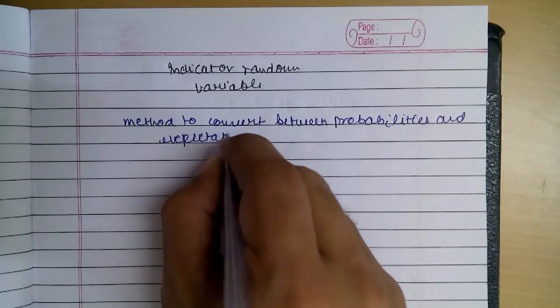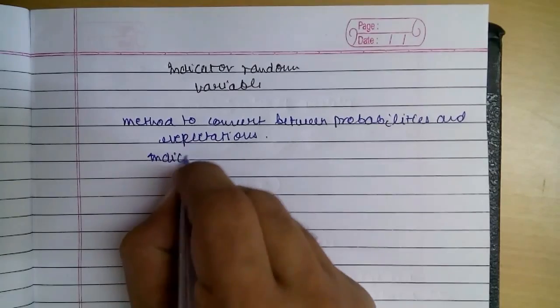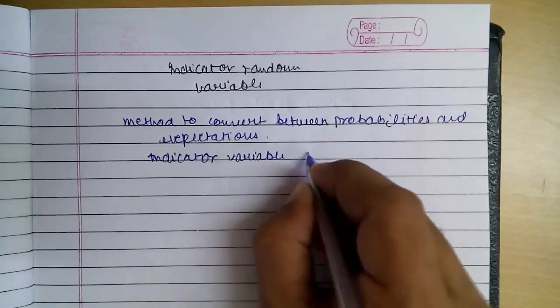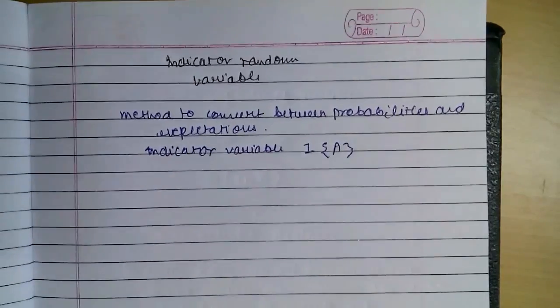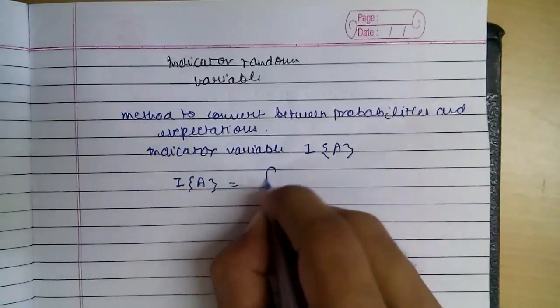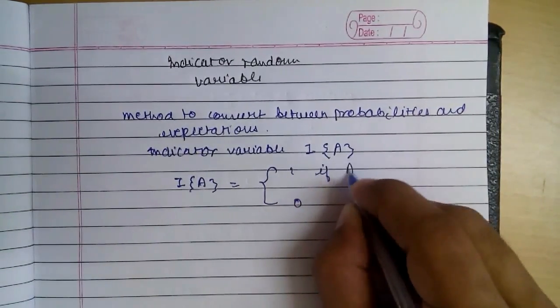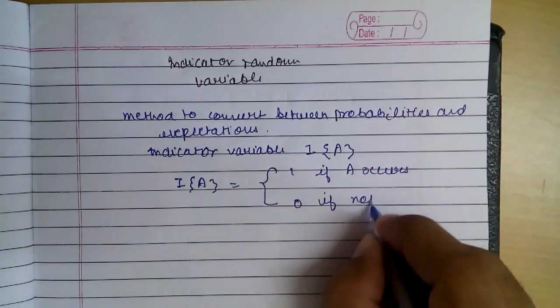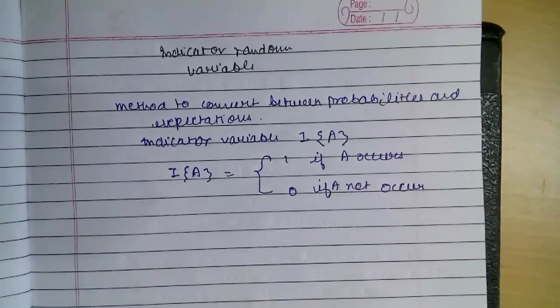Indicator Variable we denote by I of A. I of A can take values of 1 if the event A occurs and 0 if A does not occur.